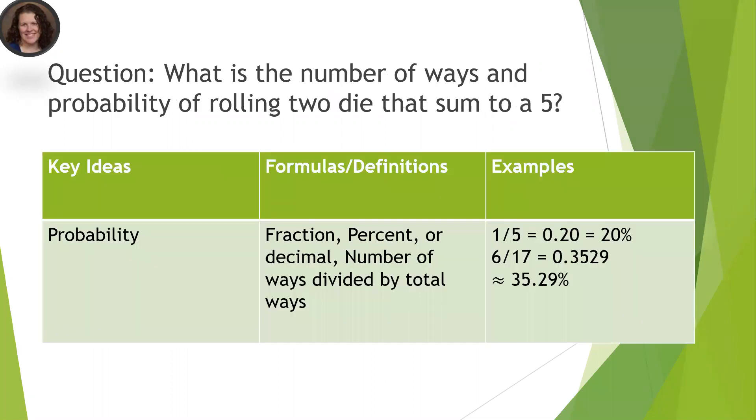As we're doing this, first I want you to think about what is probability. When we're looking for an answer that's probability, we're looking for an answer that's a fraction, a percent, or a decimal. To find the probability of something, we need to know the total number of ways that can occur. So how many different ways can we roll two dice, and how many different ways can we roll two dice that add up to five?